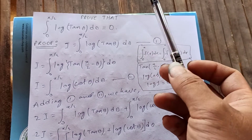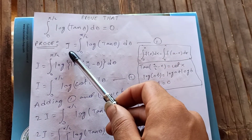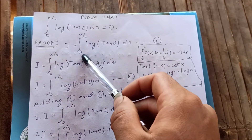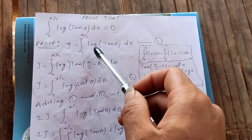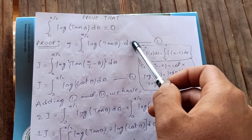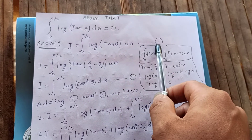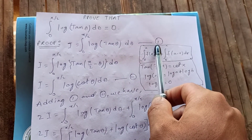To prove this, let our integral be I. So I is equal to the integral from 0 to pi over 2 of log(tan θ) dθ. Let's call this equation 1.